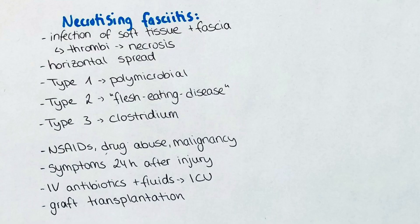The next disease on our list is necrotizing fasciitis. We know already that it can be a complication of cellulitis. It is the infection of the soft tissues and the fascia — the connective tissue overlying a muscle. As the bacteria multiply, thrombi can form and occlude vessels, which leads to necrosis of the area. The infection usually spreads horizontally, which might not be visible on the surface of the skin.